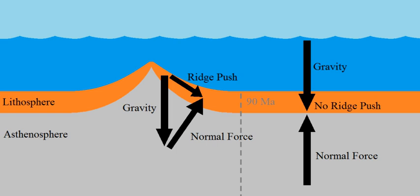Ridge push or sliding plate force is a proposed driving force for plate motion in plate tectonics that occurs at mid-ocean ridges as the result of the rigid lithosphere sliding down the hot, raised asthenosphere below mid-ocean ridges.